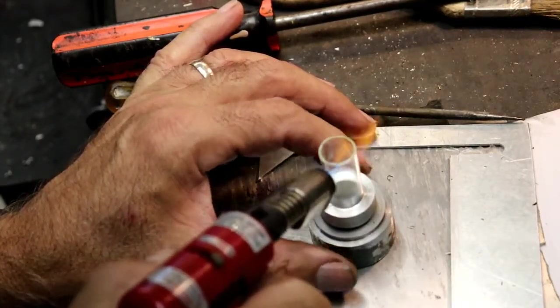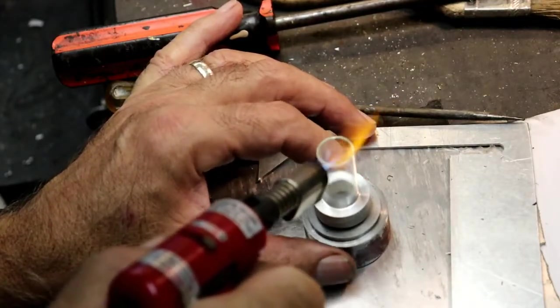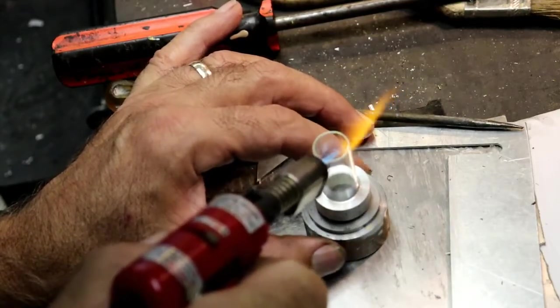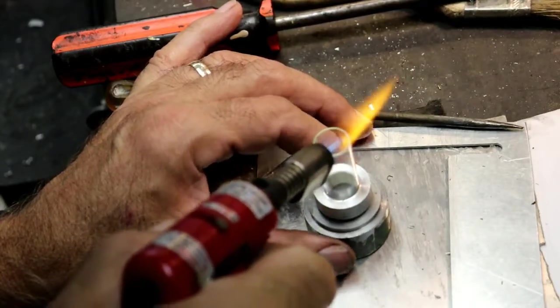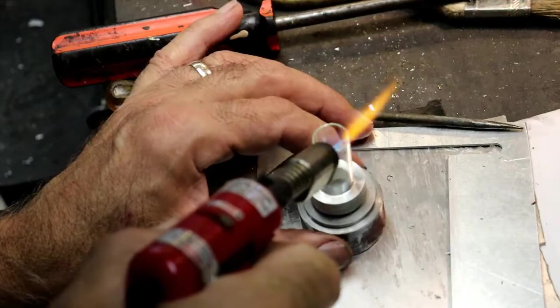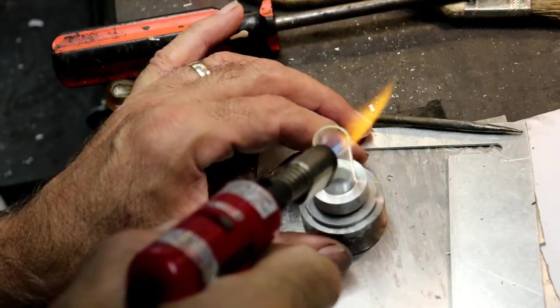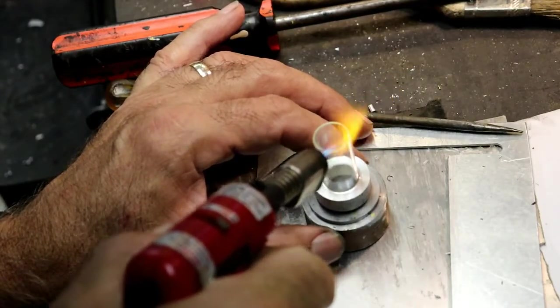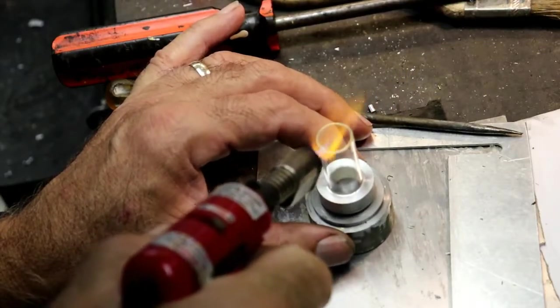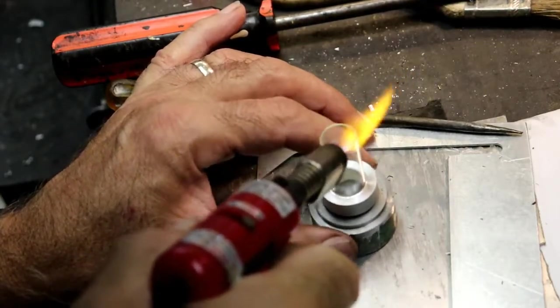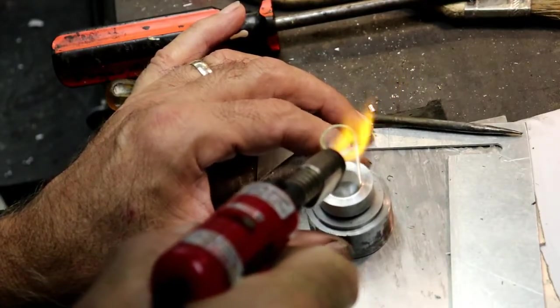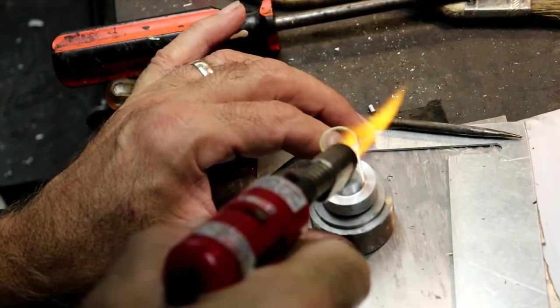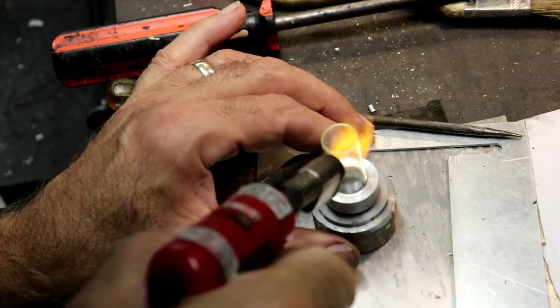The butane torch. You can kind of, if you look real close, you can see the edges kind of fade away basically. Spot right there. Right there. You can see it turn red and then you can see the edges kind of disappear as it turns into a radius.